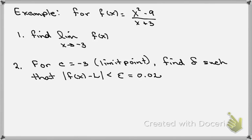The second part of the question is going to have us use that definition. It's asking us for c, which is our limit point, equal to -3. Find δ such that the absolute value of f(x) - L is less than ε and they want us to fix the epsilon at 0.02.